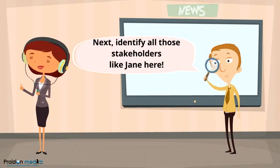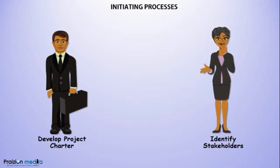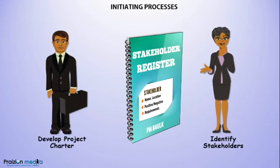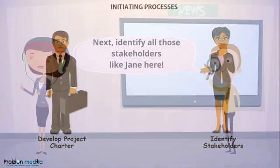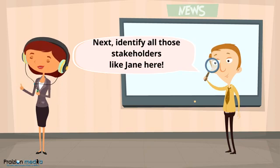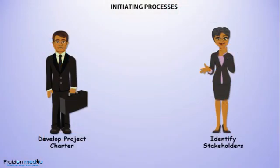The next process is Identify Stakeholders, where stakeholders are identified and analyzed. This is not a one-time event — it happens all throughout the project. The major output is called a stakeholder register. As part of analyzing stakeholders, the project manager should look at their level of power, level of interest, level of influence, and determine their attitude — hence the stakeholder grid that analyzes their attitude, power, and interest.